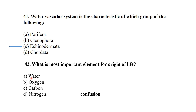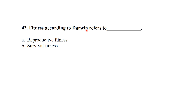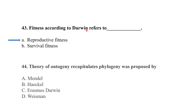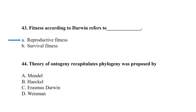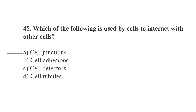Fitness according to Darwin refers to reproductive fitness. The theory that ontogeny recapitulates phylogeny was proposed by Ernst Haeckel. Cell junctions are mainly used by cells to interact with other cells.